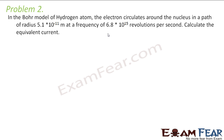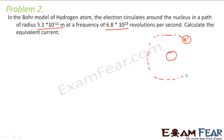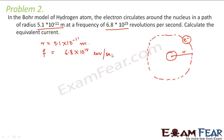The next problem says that in the Bohr model of hydrogen atom, the electron circulates around the nucleus in a path of radius 5.1 into 10 to the power minus 11 meters, at a frequency of 6.8 into 10 to the power 15 revolutions per second. Calculate the equivalent current. So the electron revolves around the nucleus, the radius r is given as 5.1 into 10 to the power minus 11 meters, and the frequency at which the electron moves is 6.8 into 10 to the power 15 revolutions per second. We have to calculate the value of current.